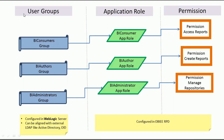Authentication basically controls who can get into OBIEE, and authorization controls who can access which report, which fields in the report, and what data in those reports — so data access and object-level access is controlled by authorization. The login is controlled by authentication.